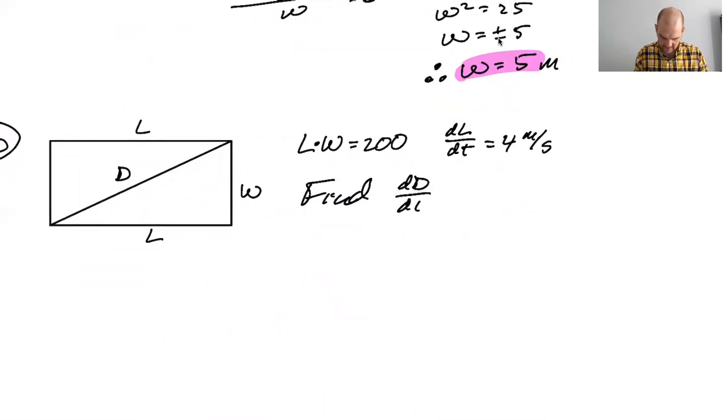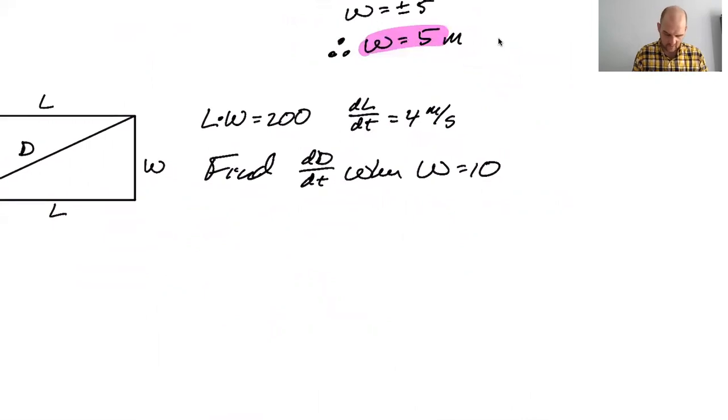So if W equals 10 right away, we know that L is equal to 20 because W times L has to be 200. That's a good start.